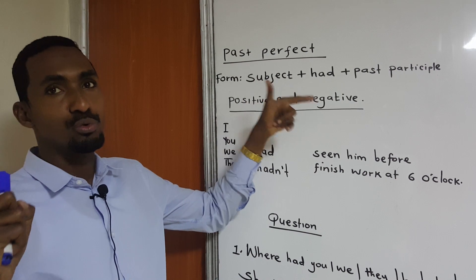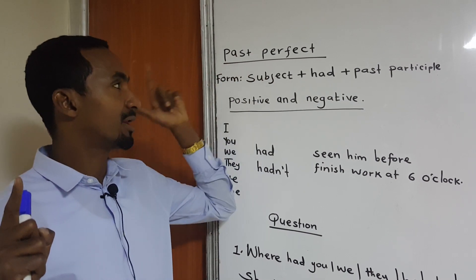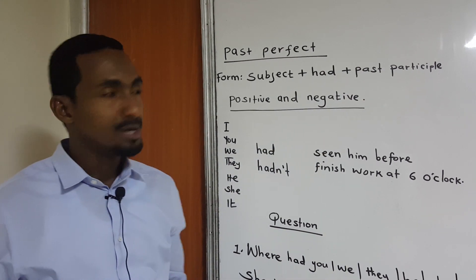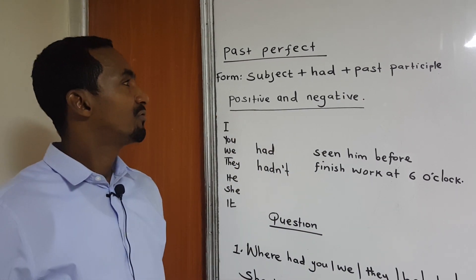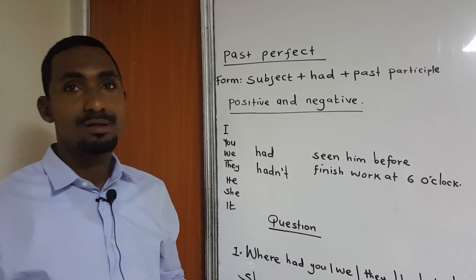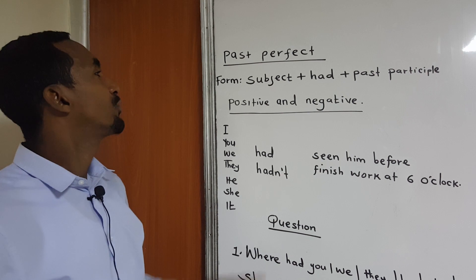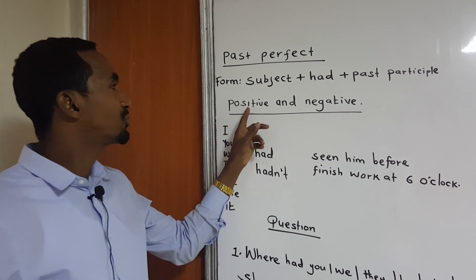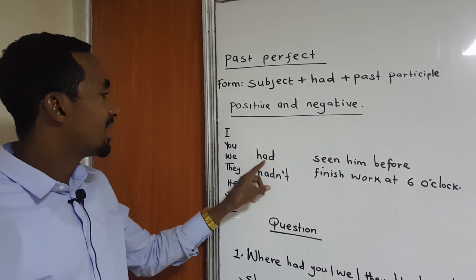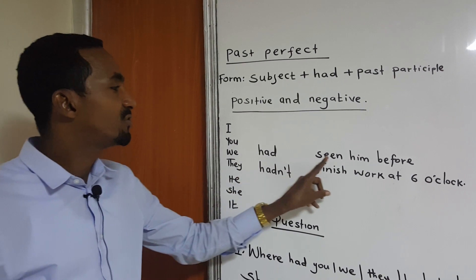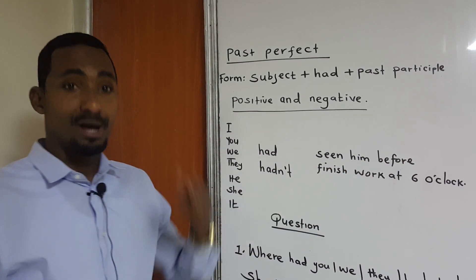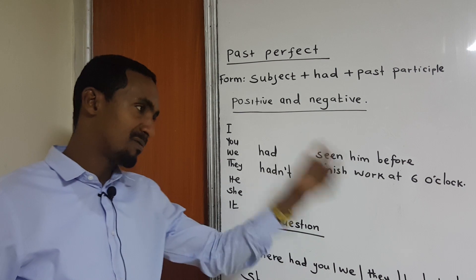I, we, you, they, he, she and it — all of them will take had plus past participle. It is very important for you to learn past participle if you want to learn this tense very well. So now let's move to the positive and the negative. I had — then this is the past participle. I had seen him before.